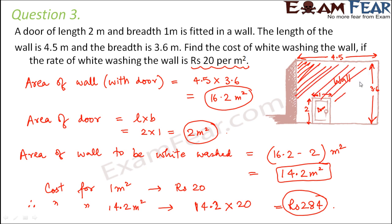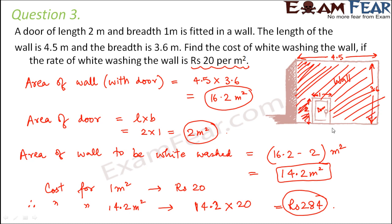To summarize: when whitewashing the wall, we first find the entire area of the wall including the door, then find the area of the door, and subtract the door's area to get the area of the wall to be whitewashed.